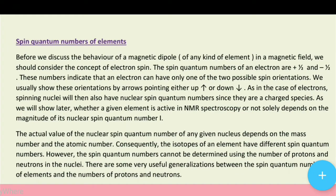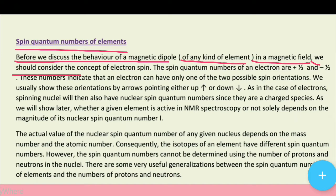Phir uske baad aata hai spin quantum numbers of elements. Jo NMR spectroscopy hai, udher spin quantum numbers ka bhi concept pata hona zaroori hai. Before we discuss the behavior of a magnetic dipole of any element in a magnetic field, we should consider the concept of electron spin. A given magnetic field mein magnetic dipole kaise behave karta hai, usko describe karne se pehle, humein spin ke baare mein pata hona chahiye.